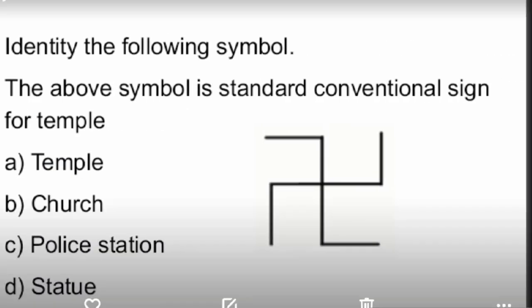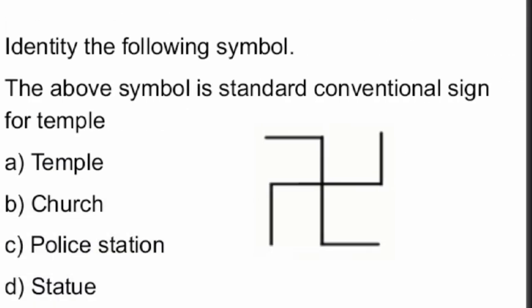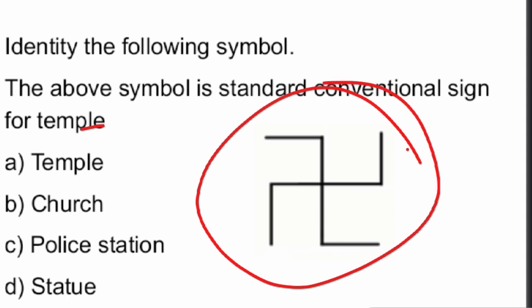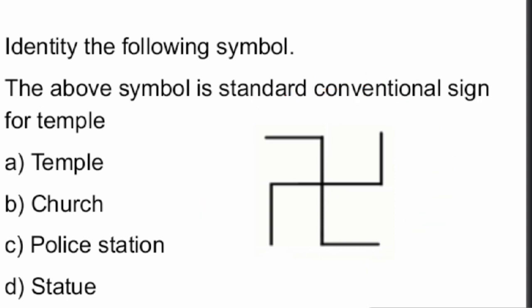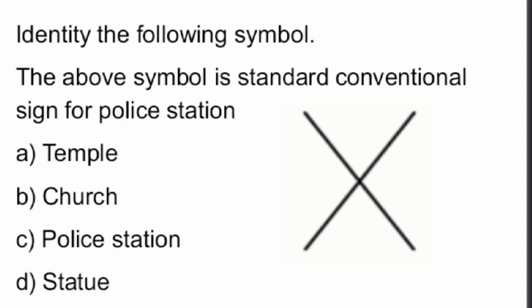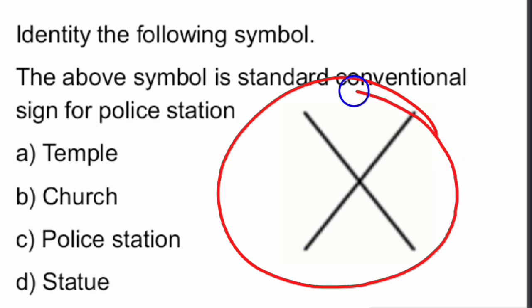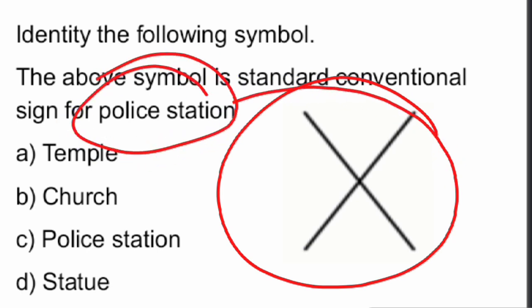The next symbol represents the conventional sign for a temple. After that, the following symbol is the conventional sign for a police station.